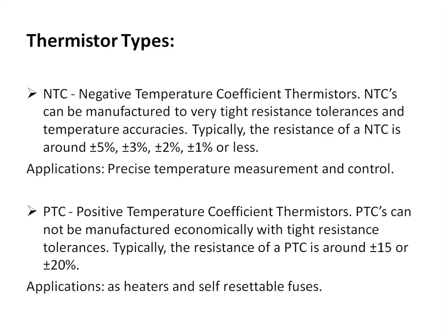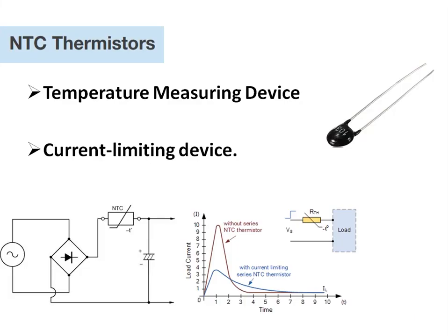PTC thermistors — positive temperature coefficient of resistance — cannot be manufactured economically with very tight tolerances. Typical tolerances of PTC are plus or minus 15 or plus or minus 20 degrees centigrade. PTC will have an increase of resistance with respect to increase of temperature. Typical applications of PTC are heaters and self-resetting devices, and because of poor tolerance, they cannot be used for precise temperature measurement.